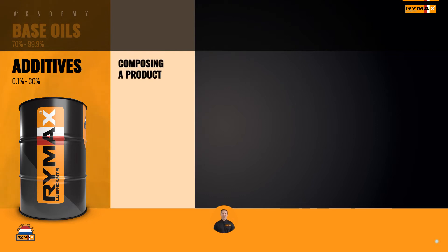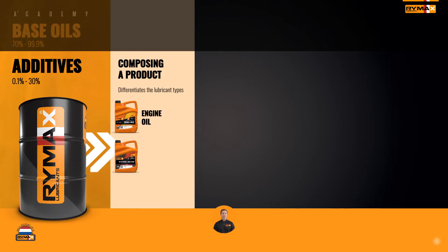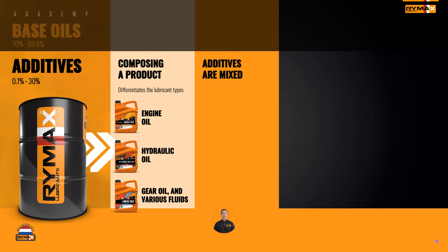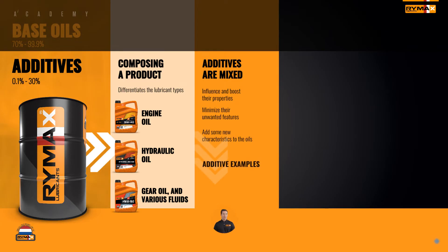It is the additives that differentiate the lubricant types, such as engine oils, hydraulic oils, gear oils, and various fluids. The additives are mixed into the base oils to influence and boost their properties, minimize their unwanted features, and even add some new characteristics to the oils. Some examples of lubricant additives are rust inhibitors, antioxidants, and viscosity improvers.